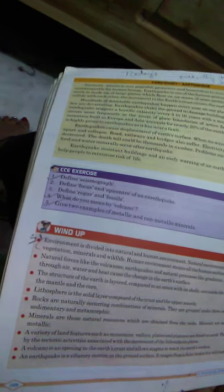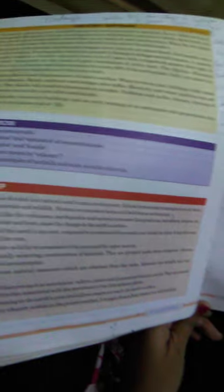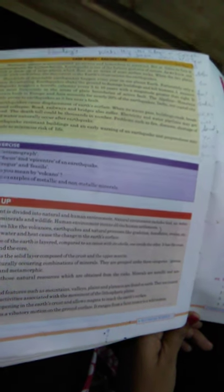Lithosphere is the solid layer composed of the crust and the upper mantle. Rocks are naturally occurring substances, which combination of minerals.